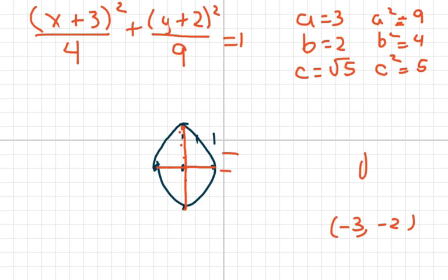So square root of 5 is in between the square root of 4 and the square root of 9, which is in between 2 and 3.